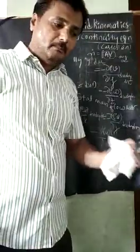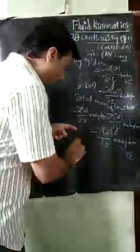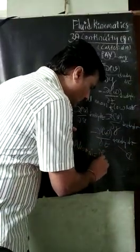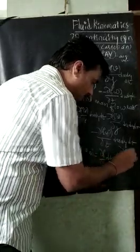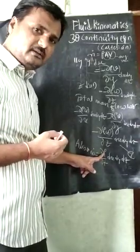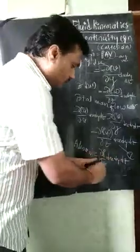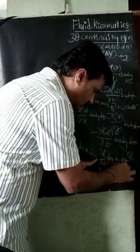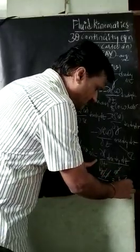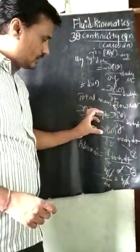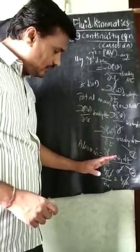The total mass flow rate can also be written as: ∂ρ/∂t · dx·dy·dz, which accounts for the change in density with time — applicable for compressible flow. Here ρ has units of kg/m³, and with the volume m³ and time in seconds, this gives kg/s, which is indeed a mass flow rate. This is Equation 2.